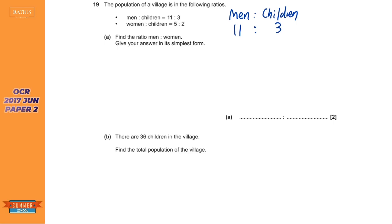We're also given women to children. What I'm going to do is write that ratio the other way around — instead of five to two, I'm going to do children to women, which would be two to five. The objective here is to get the parts for children the same. The first ratio has three parts children, the second ratio has two parts children, so the lowest common multiple of three and two is six.